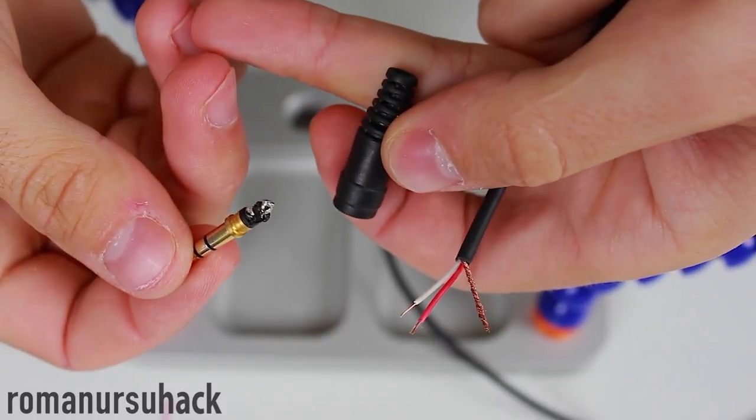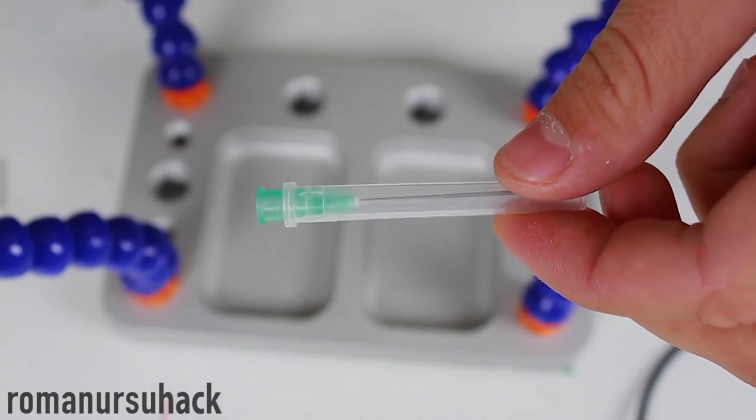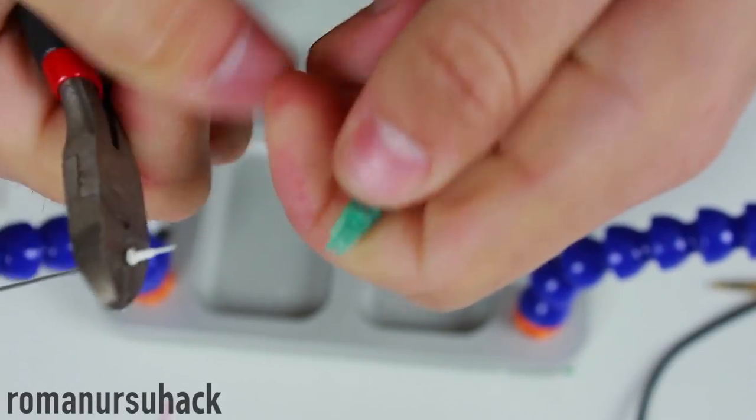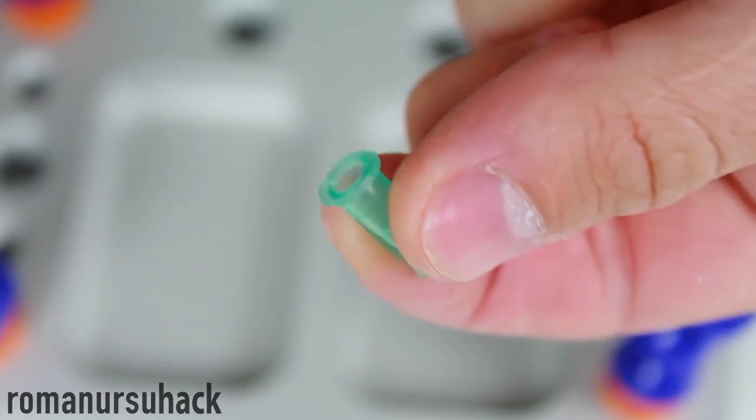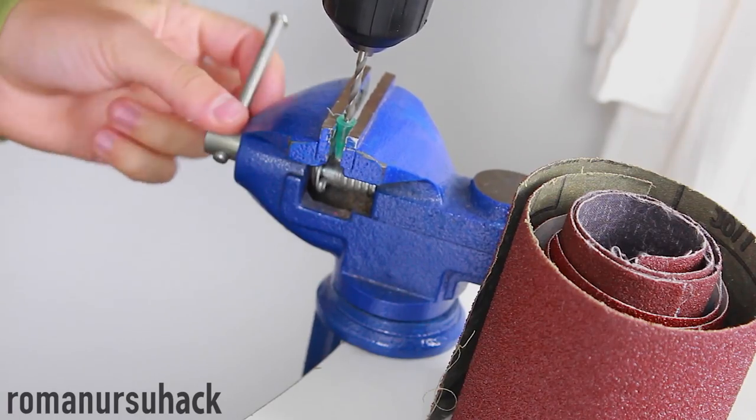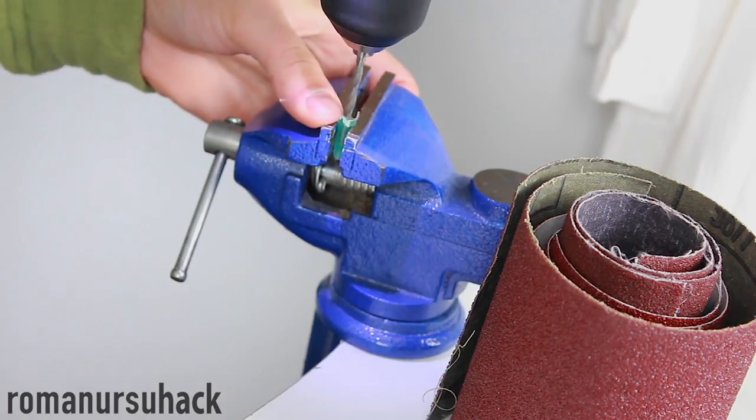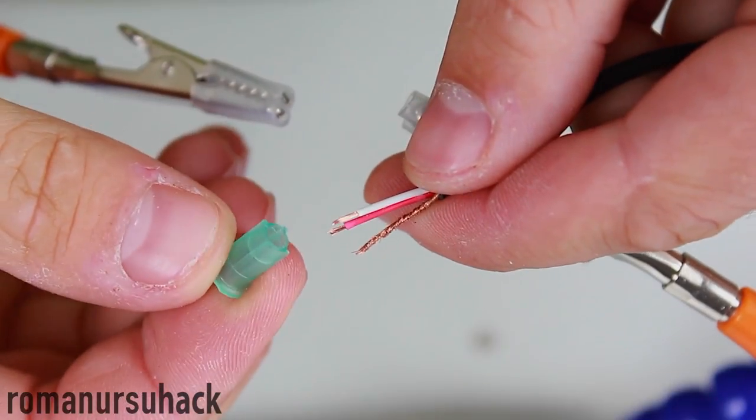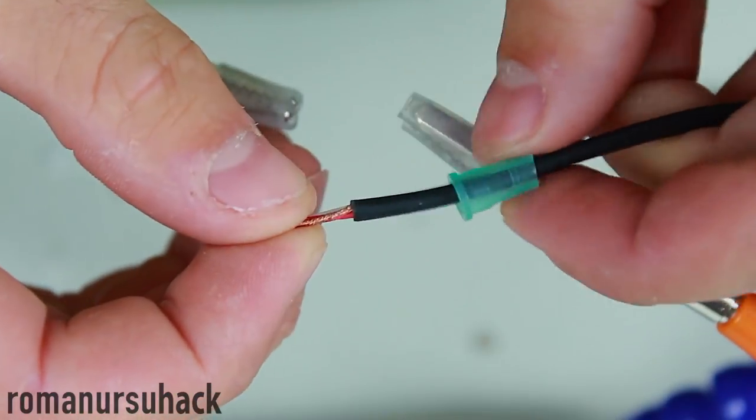The last idea should help you out in case your earphones broke down. In case you tore your earphone cable out of the input plug, not a problem, you can substitute the outer case with such a needle adapter. All you need to do is just carefully take the needle out and drill a hole of the same diameter as the diameter of your cable.